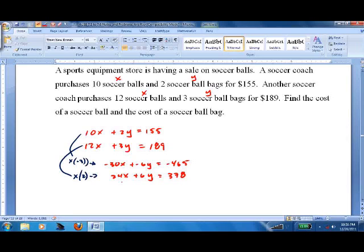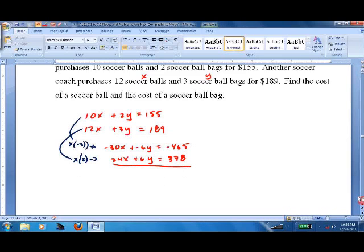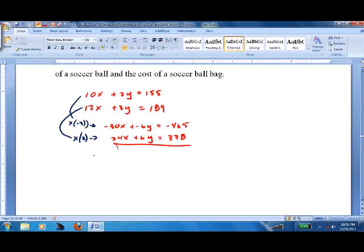Equals 378. So add down. We get negative 6x equals negative 87. Divide both sides by negative 6. X equals 14.5. Plug it back in. 10 times 14.5 plus 2 times y equals 155. 145 plus 2y equals 155.